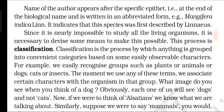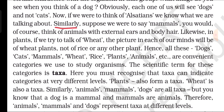Classification is a process by which anything is grouped into convenient categories based on some easily observable characters. For example, we easily recognize groups such as plants, animals, dogs, cats, or insects. When we use any of these terms, we associate certain characters with the organisms in that group. Similarly, if we say mammals, we think of animals with external ears and body hair. All these — dogs, cats, mammals, wheat, rice, plants, animals — are convenient categories we use to study organisms. The scientific term for these categories is taxa. Taxa can indicate categories at very different levels — plants form a taxon, wheat is also a taxon, and animals, mammals, and dogs represent taxa at different levels.